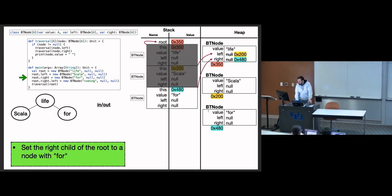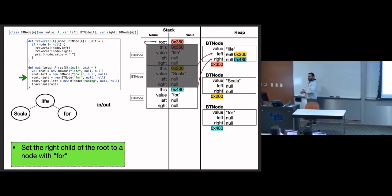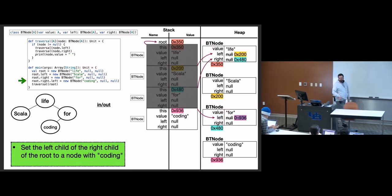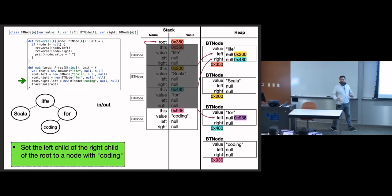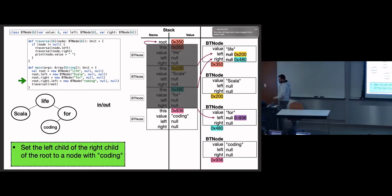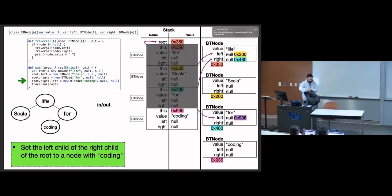We do the same thing on the right side — create another new binary tree node with the value `for`, null, null, and assign it to the root's right. Then one more new node that's going to be the root's right-dot-left, with the value `coding` and two nulls for its children. So we called the constructor four times, got four objects on the heap and references to those objects, which builds this tree structure.